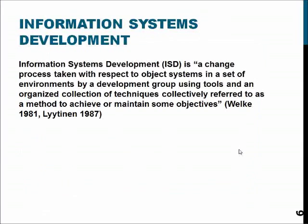Besides existing, we have to develop these things. Basically, the idea of information systems development is to change the process taken with respect to object systems in a set environment by a development group, using tools and an organized collection of techniques collectively referred to as a method, to achieve or maintain some objectives. In other words, information systems development aims to develop a more useful system that conveys information in a more useful or efficient way, and is developed systematically by someone who knows what they're doing.